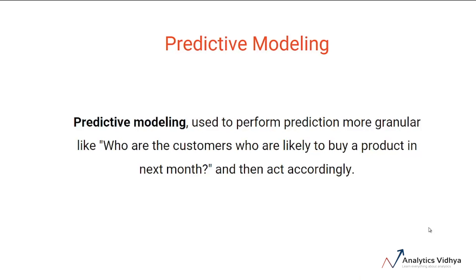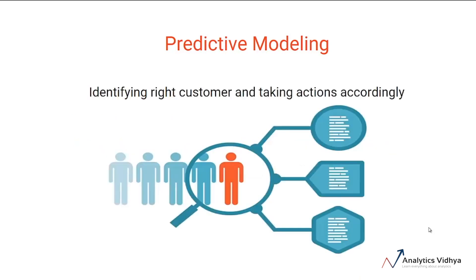The outcome of predictive modeling would typically look something like this. At a customer level, you will predict the probability of a particular outcome and then take the actions accordingly.